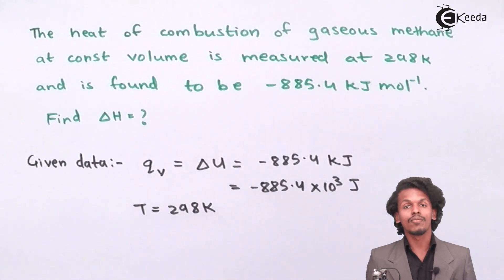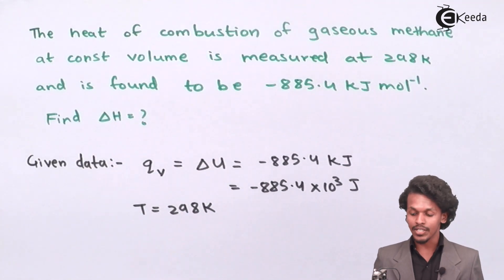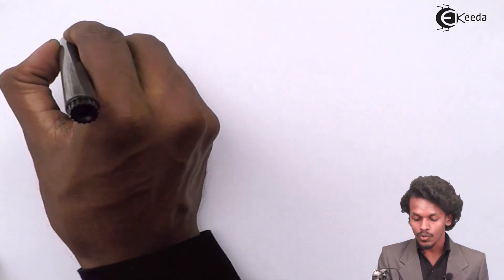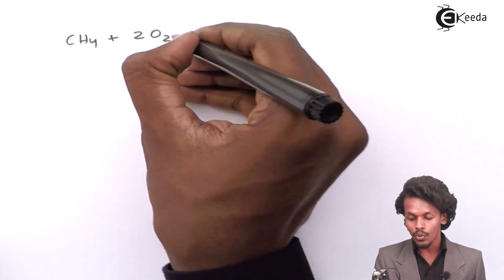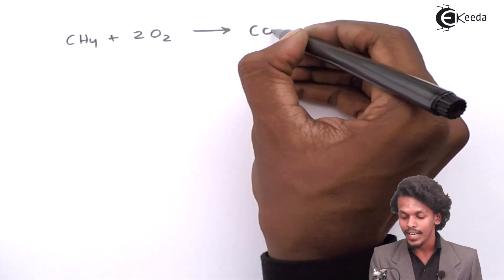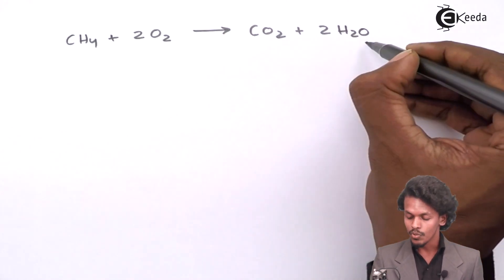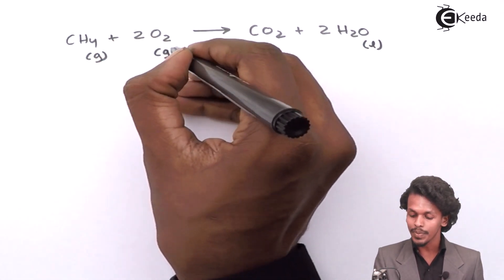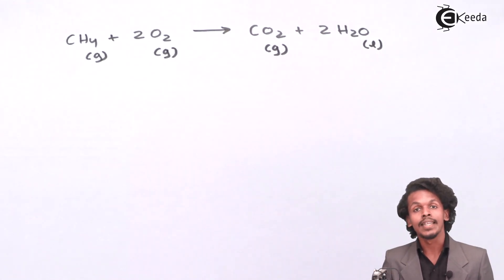We also have to find the value of delta N. First, we should know the reaction for combustion of methane. When CH4 undergoes combustion, it combines with 2O2 to form CO2 plus 2H2O. In this case, H2O is in liquid state, while methane, oxygen, and carbon dioxide are all present in gaseous state.